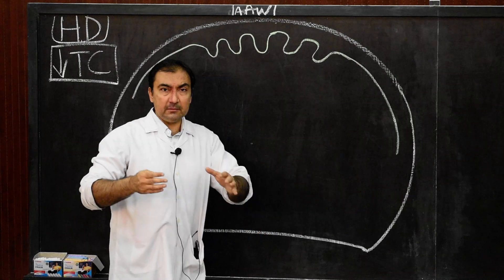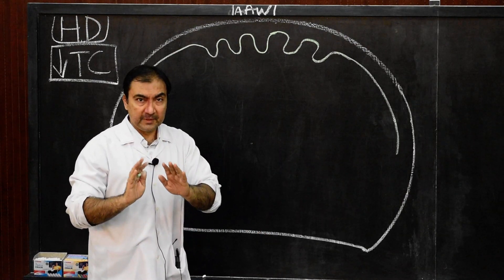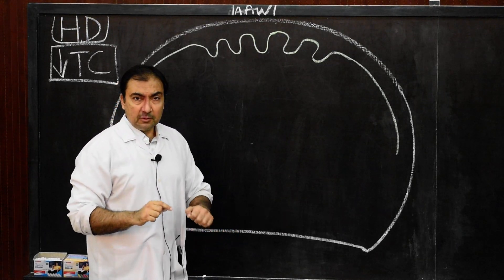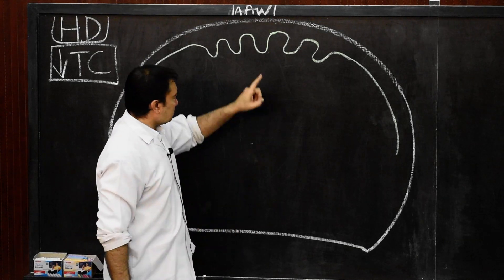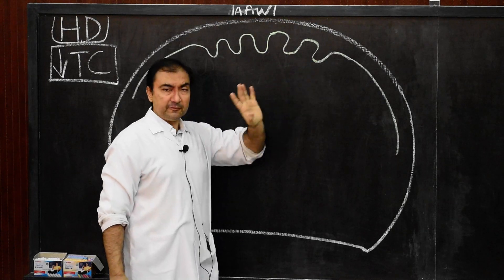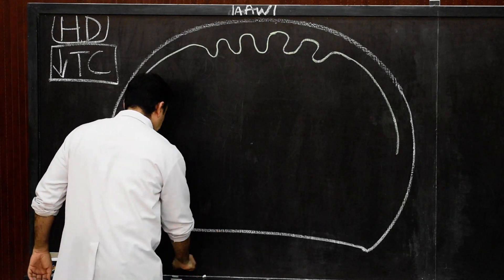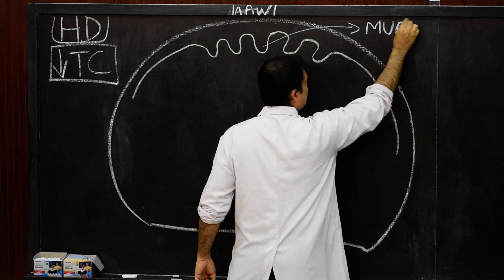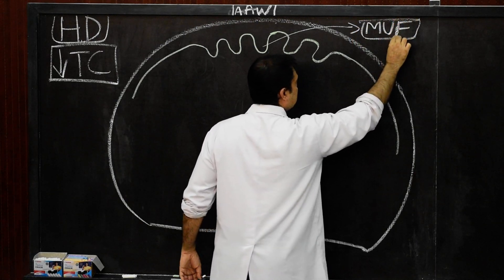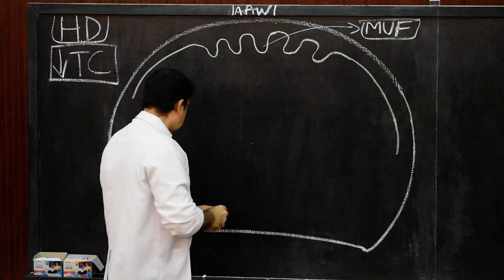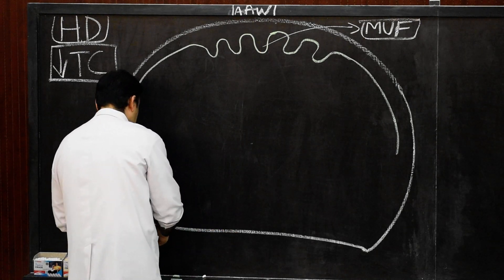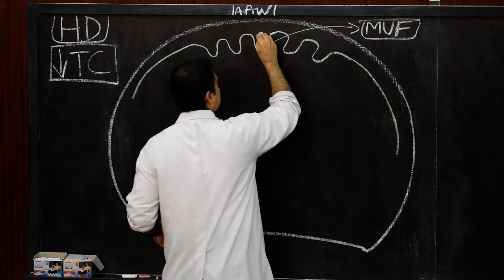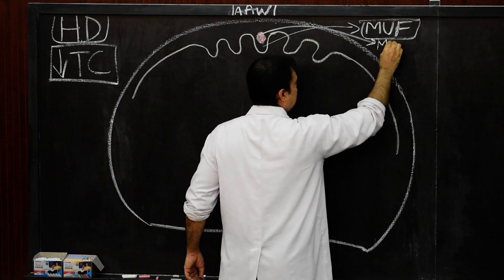In the anterior abdominal wall, the peritoneum disposition horizontally will show five major folds. The first is the median umbilical fold. This fold of peritoneum is because of the structure known as the median umbilical ligament. We draw and mark this as the median umbilical ligament.